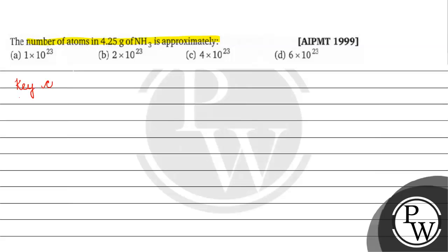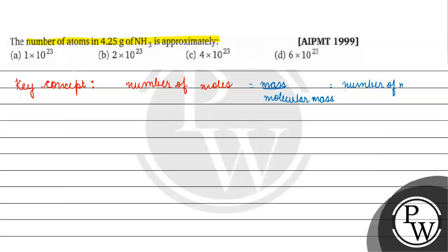The key concept for this question is: number of moles equals mass divided by molecular mass, which also equals number of molecules divided by Avogadro's number.